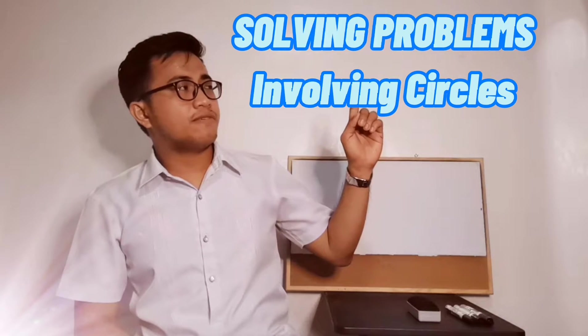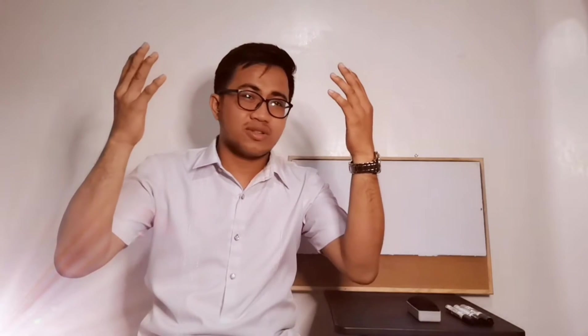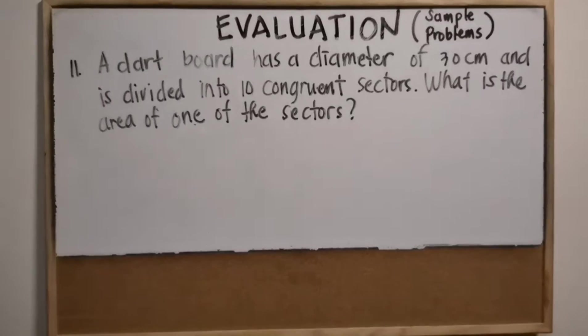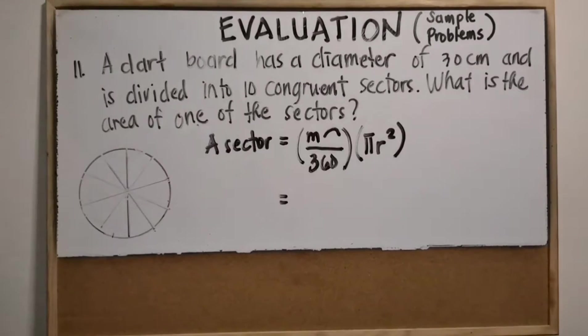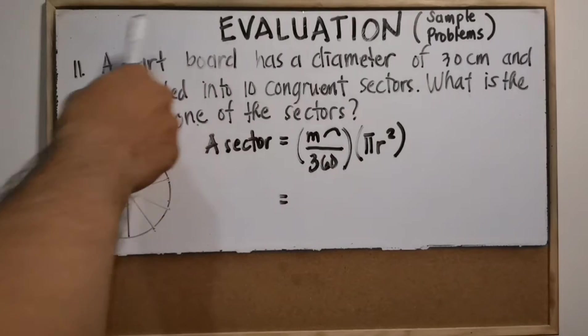Welcome back to my channel everyone. For this time we will be talking about solving problems involving circles, so sit back, relax, and enjoy this video tutorial. Problem number 11: a dartboard has a diameter of 30 centimeters and is divided into 10 congruent sectors. What is the area of one of the sectors?